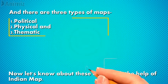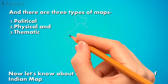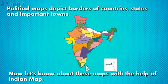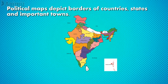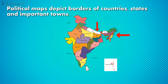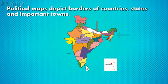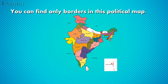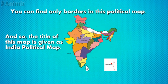Now let's learn about these maps with the help of an Indian map. Political maps depict borders of countries, states, and towns. As you can see here, this is the border of the state Assam, and this is the border of the country Nepal. You can find borders shown in this political map, and so the title of this map is given as 'India Political Map.'